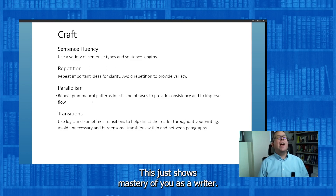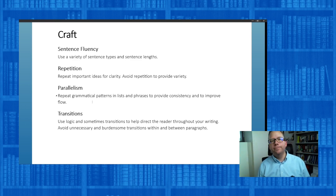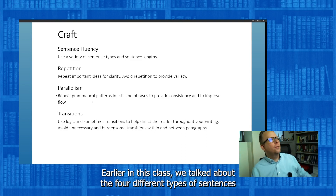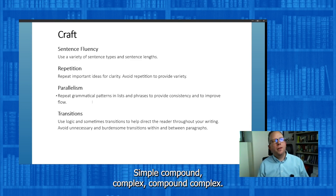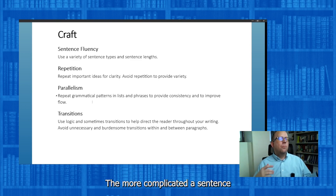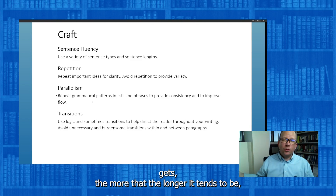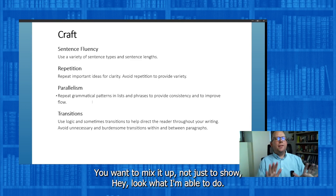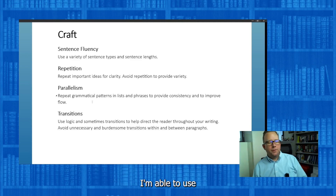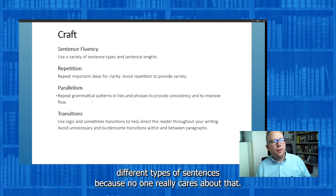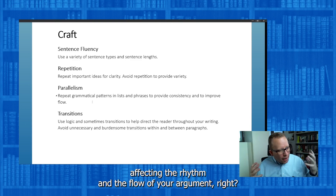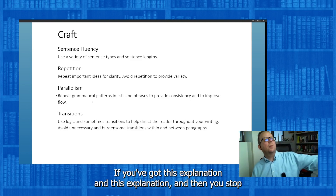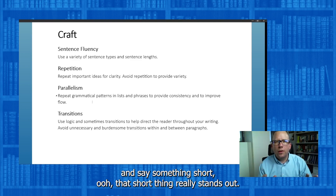Sentence fluency shows mastery as a writer. You don't want to always use the same kind of sentence. We talked about the four different types: simple, compound, complex, and compound-complex. The more complicated a sentence gets, the longer it tends to be because you've got more parts. You want to mix it up — not just to show off, but because it affects the rhythm and flow of your argument. If you've got a long explanation and then you stop and say something short, that short thing really stands out.